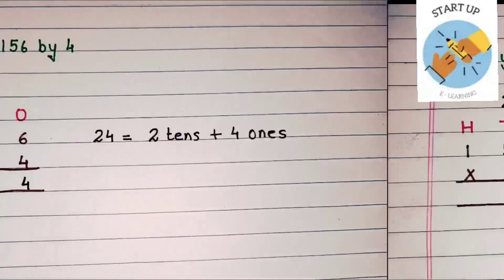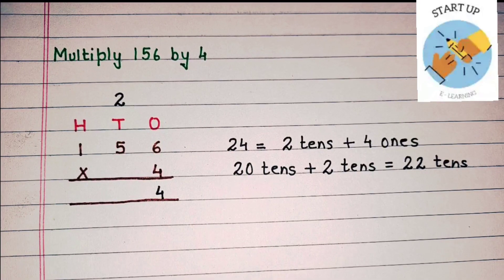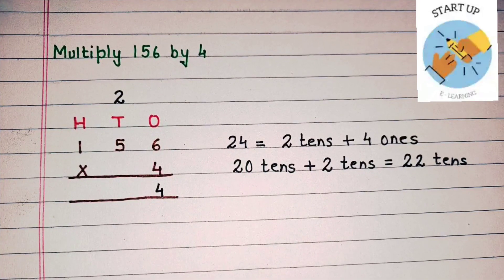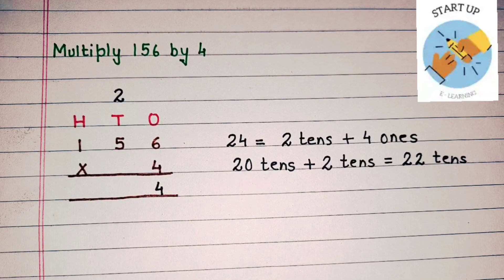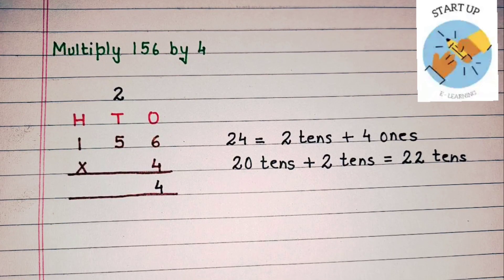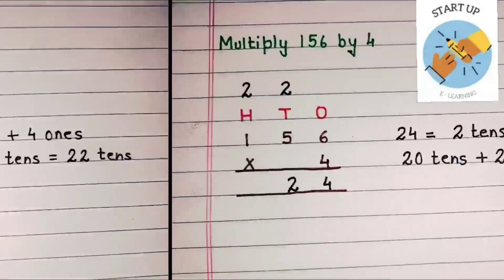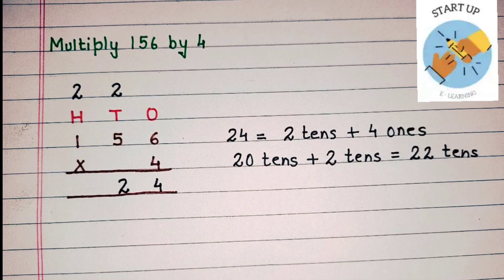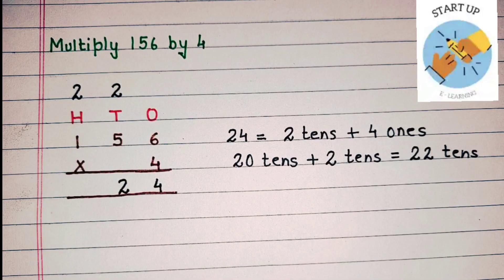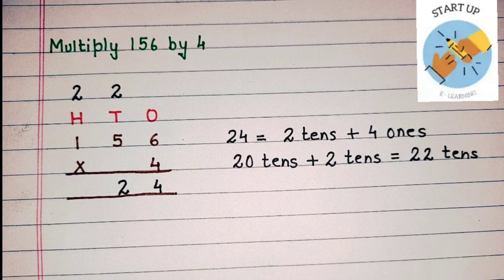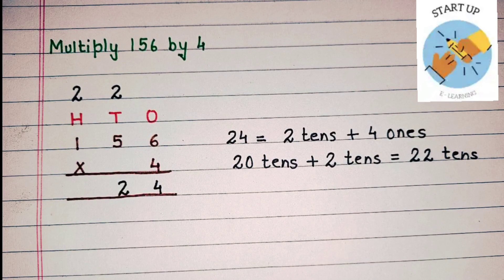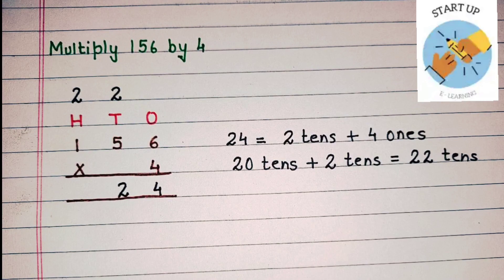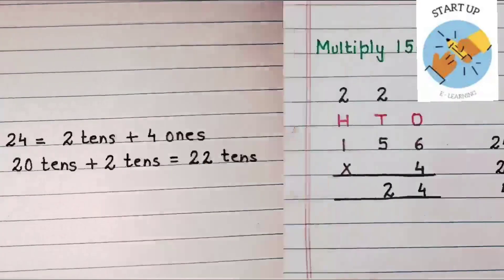So we have carried over 2 here on 10's. Now 4 will be multiplied by the digit at the 10's place. 4 multiplied by 5 is equal to 20. 20 plus 2 which were carried over is equal to 22 tens. The digit at the 10's place will be written at the 10's place and the other 2 will be carried over on 100's, because 22 tens is equal to 2 hundreds and 2 tens.